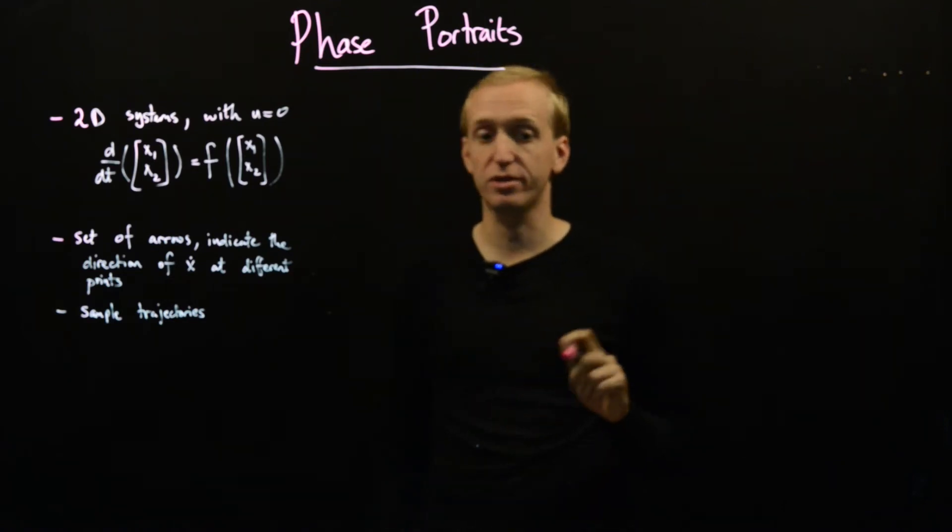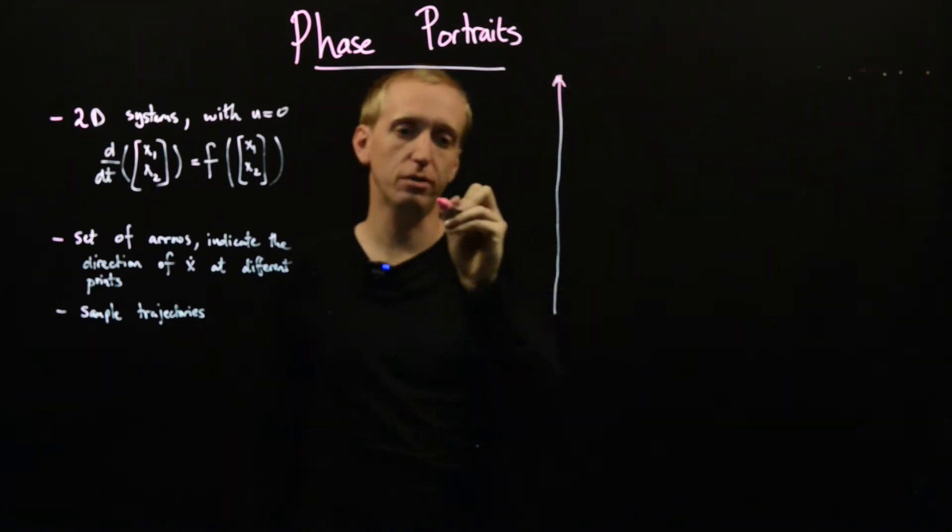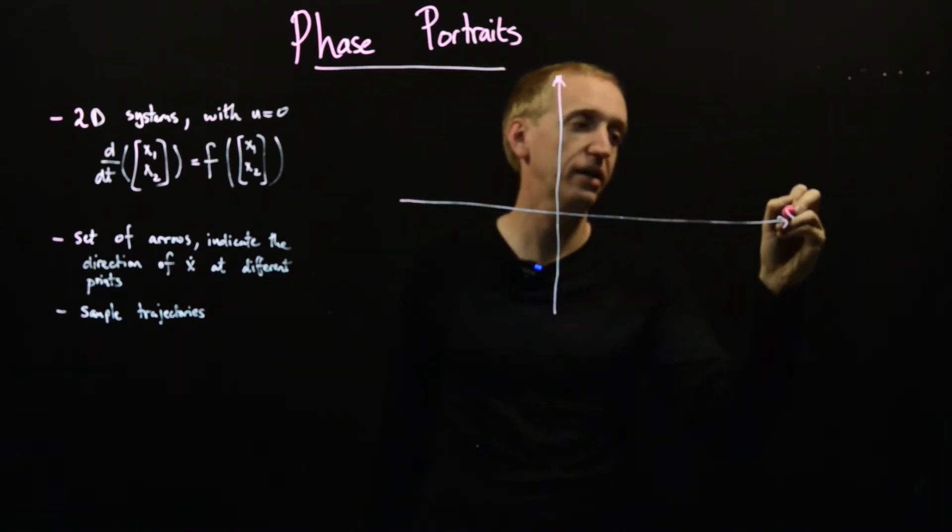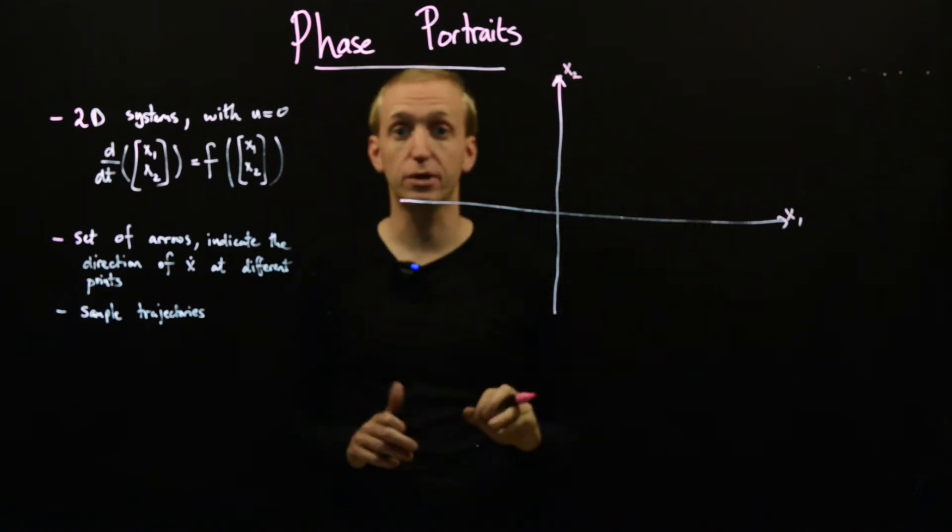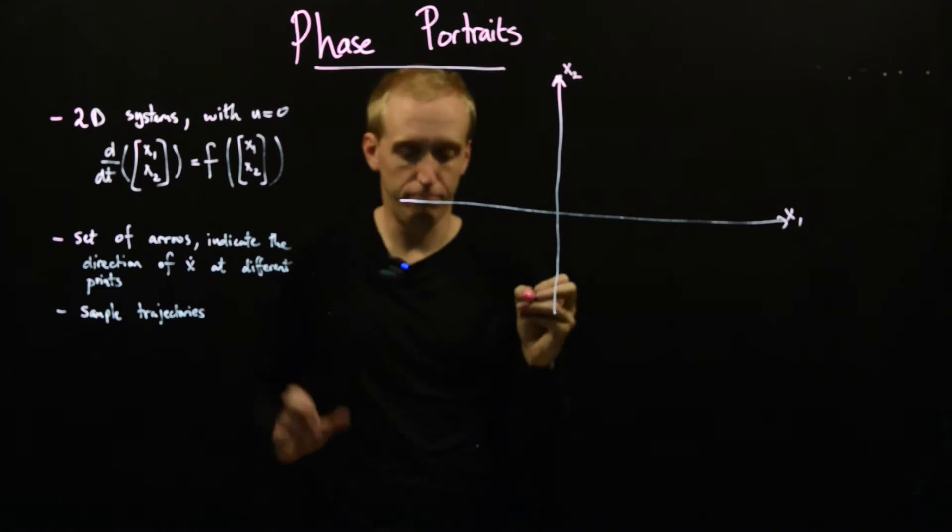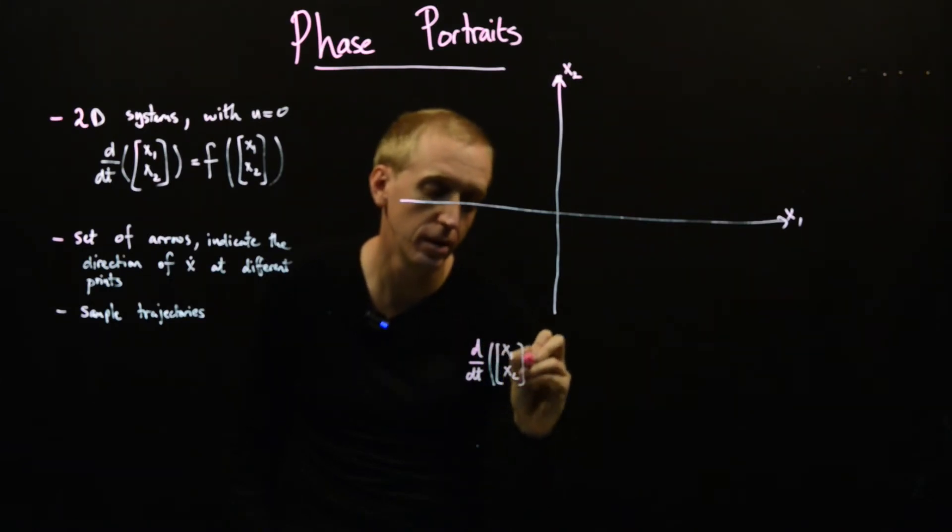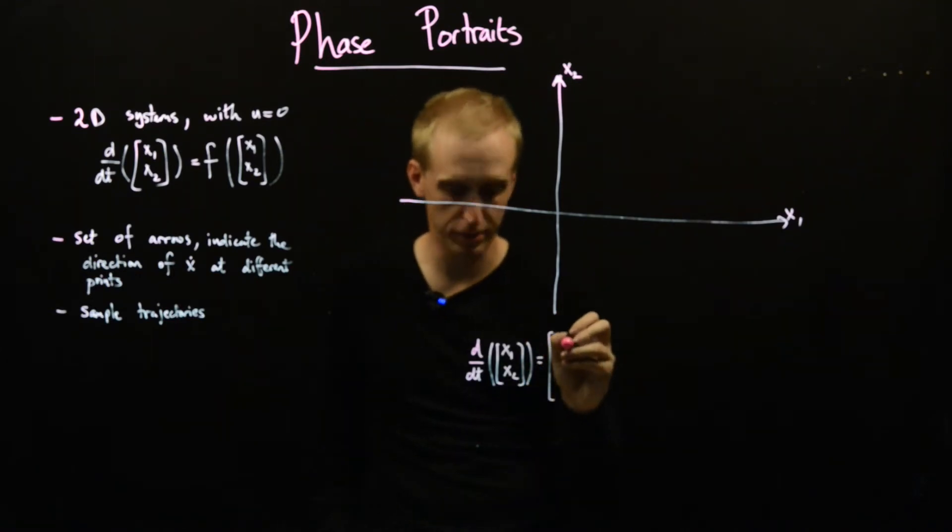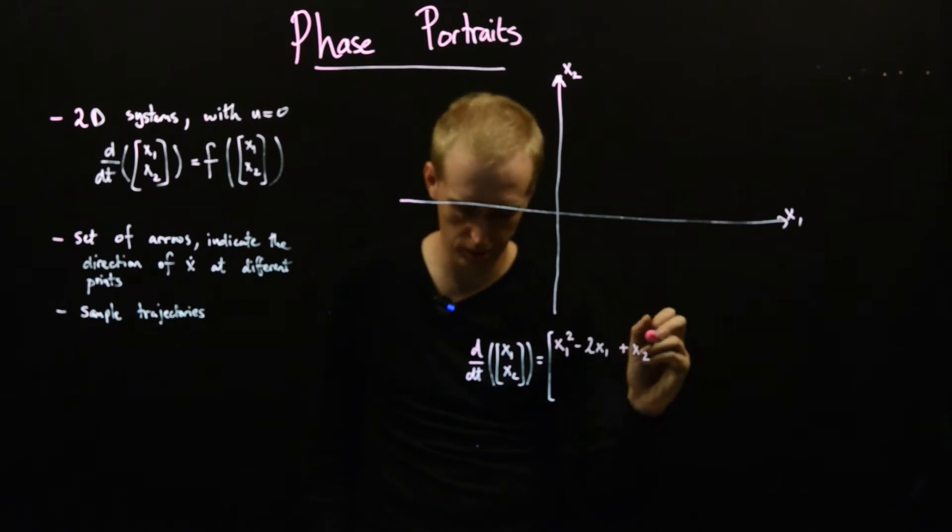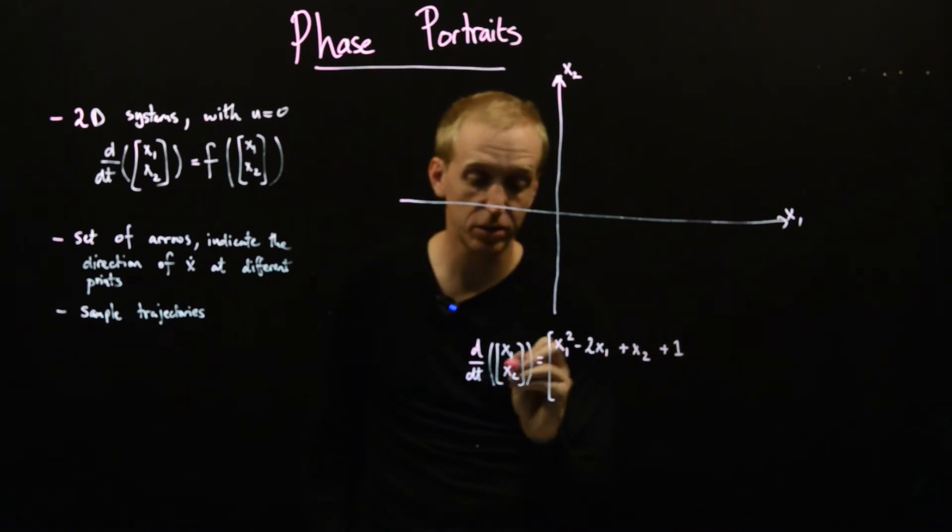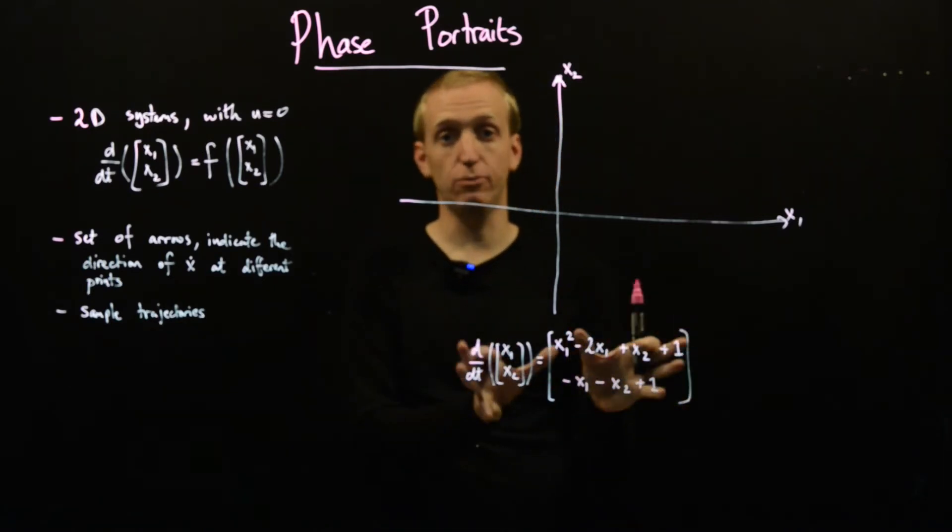And probably the easiest way to see all of this is to just do a concrete example. So a phase portrait is just a picture in 2D where we have one axis for one of our states x1 and another axis for one of our states x2. And we just draw on a lot of arrows corresponding to x dot and maybe a few sample trajectories. So to flesh this out a bit, let's suppose that the system that we're interested in has two states. Let's say it's governed by this differential equation: x1 dot is x1 squared minus 2x1 plus x2 plus 1, and x2 dot is minus x1 minus x2 plus 1. For the sake of argument, let's say this was our system.